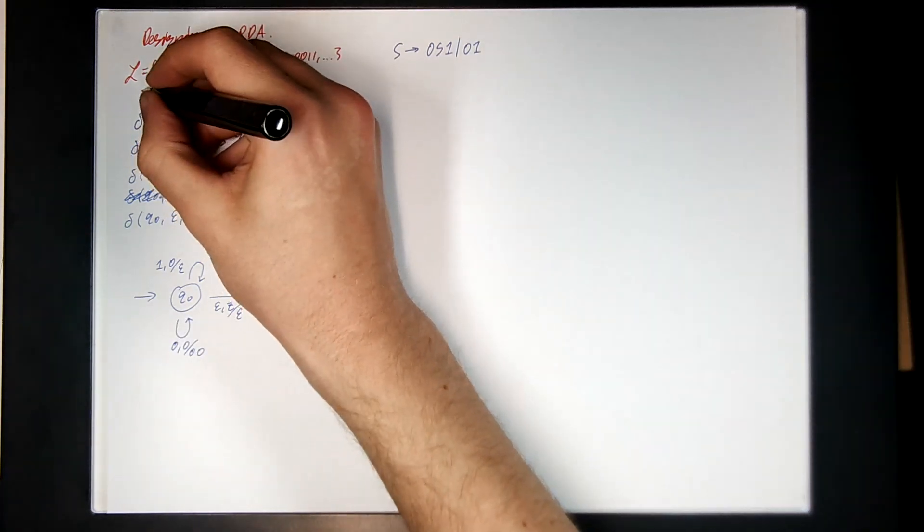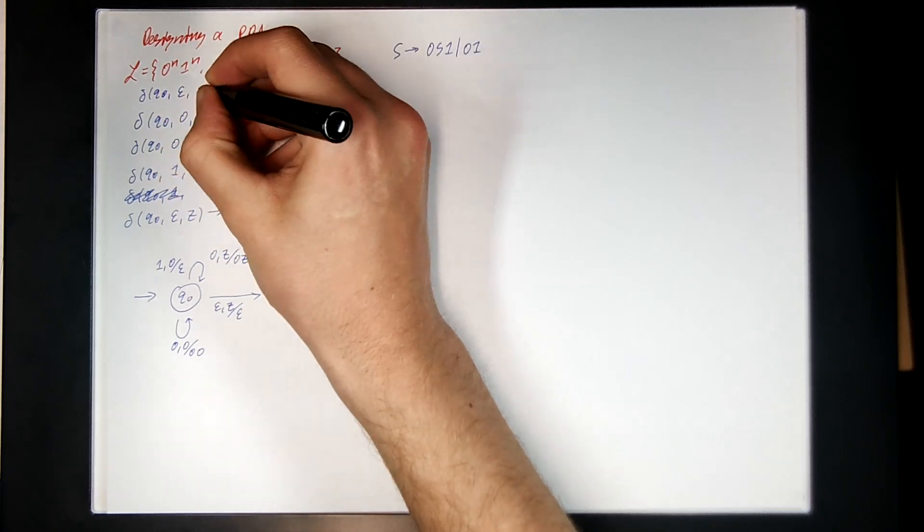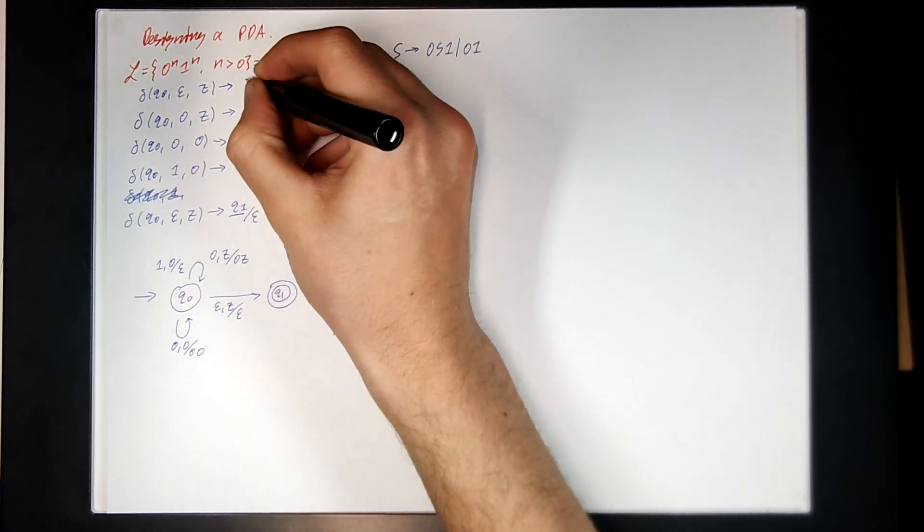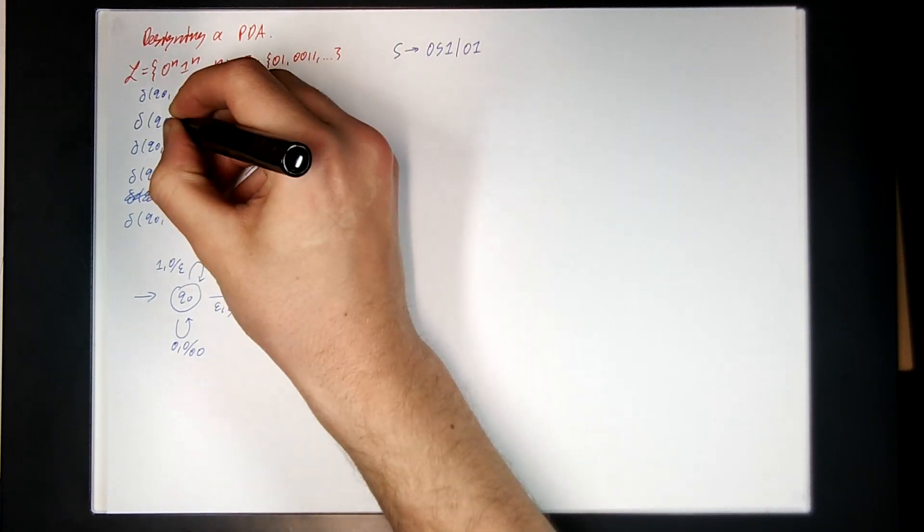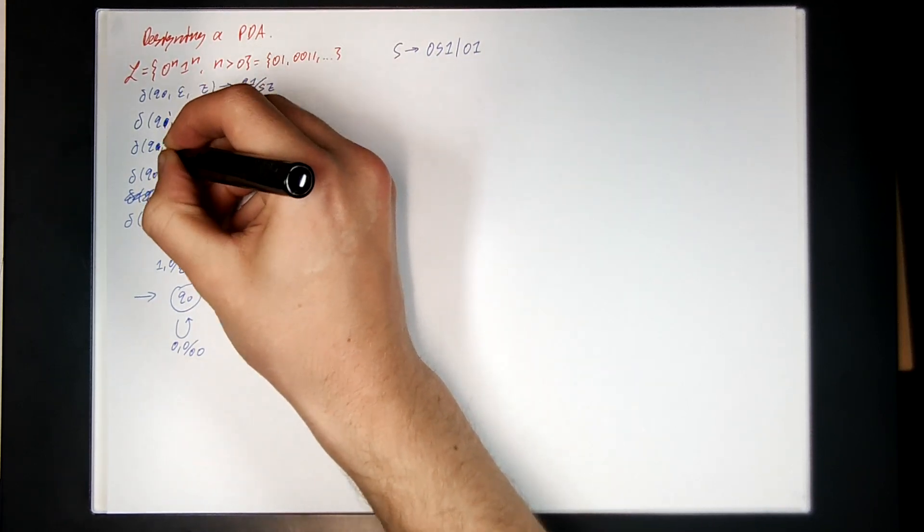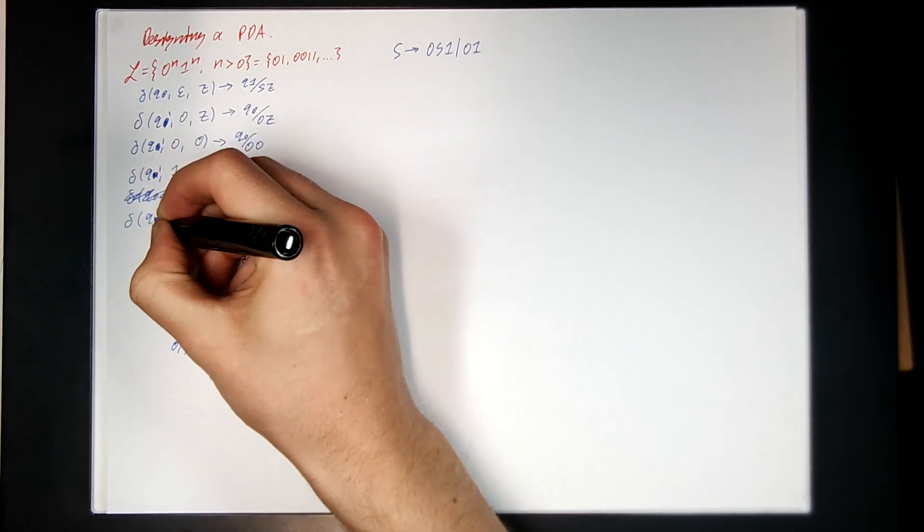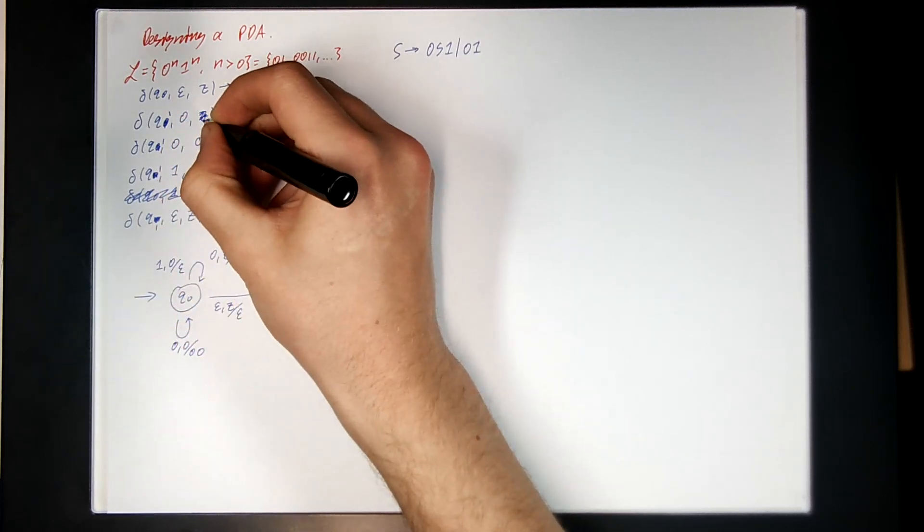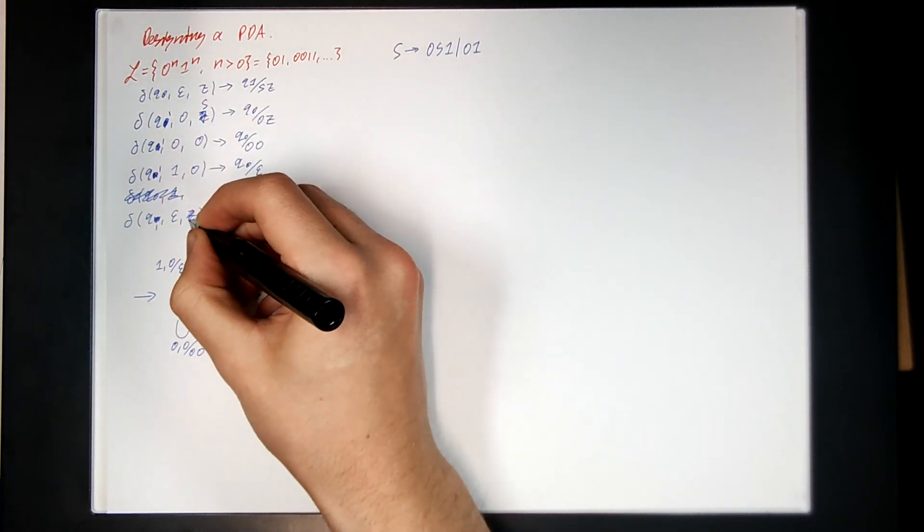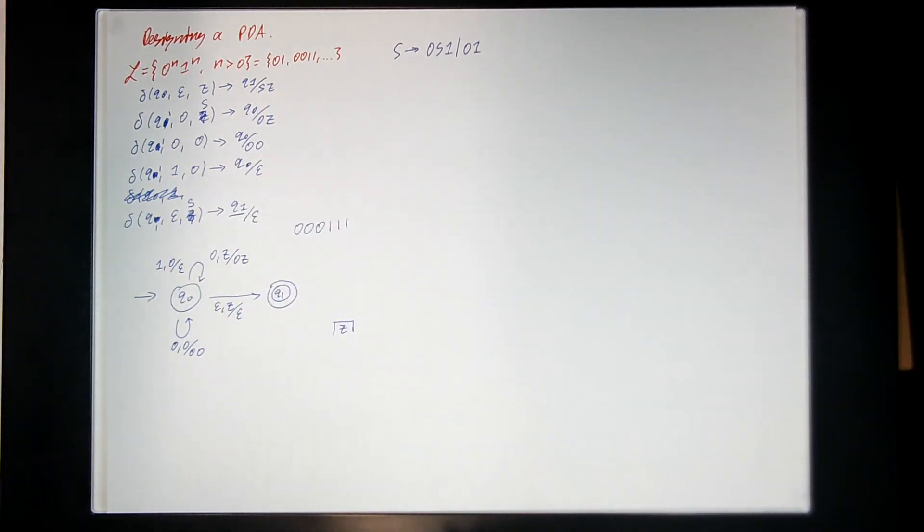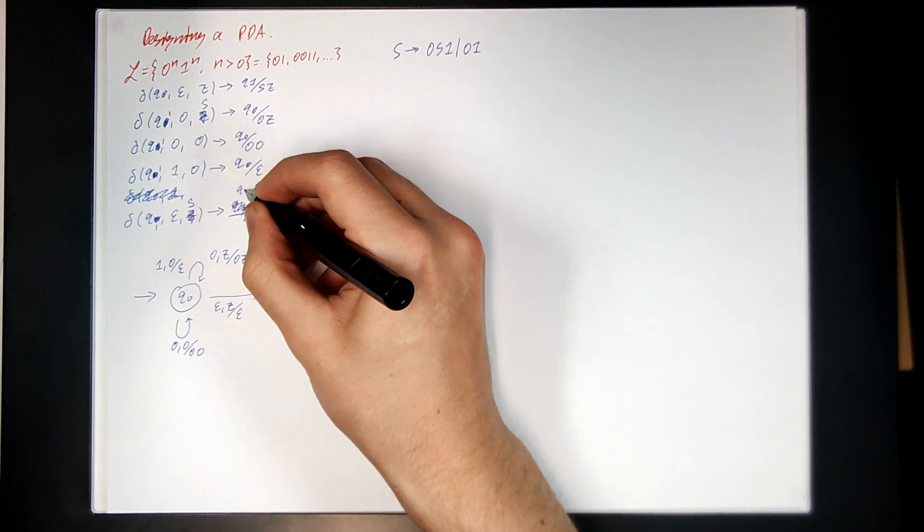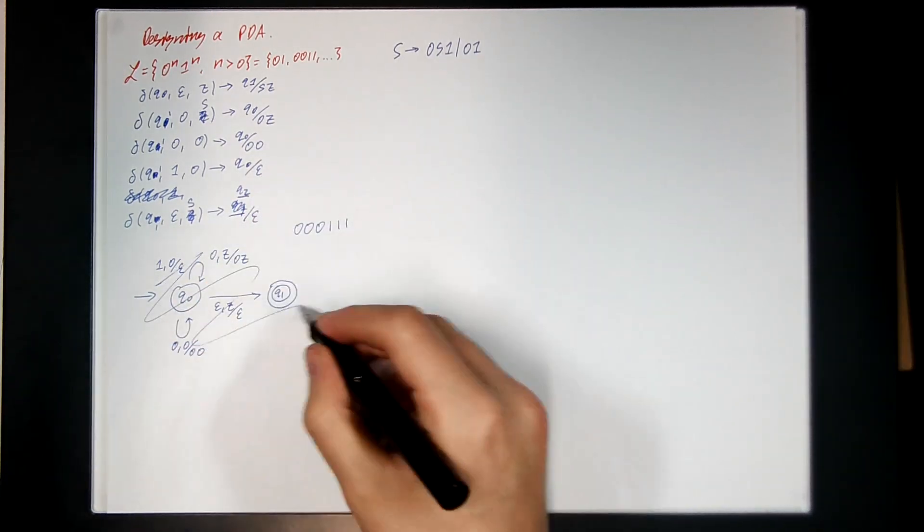So Q0, Epsilon Z goes to Q1, SZ. Change all these guys to Q1s. Change that to an S, change that to a S, and then you transition to some state Q2 and accept. All right, cool. So let's try that again.